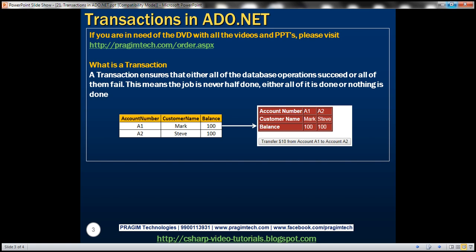Let's understand this with an example. We'll be using an accounts table with two account numbers, two customers, and each customer has a balance of $100. We want to design a web form to display account numbers, names, and balance. When we click a button, we want to transfer $10 from account A1 to account A2. For this, two update statements must happen: the first deducts $10 from A1, and the second adds $10 to A2.